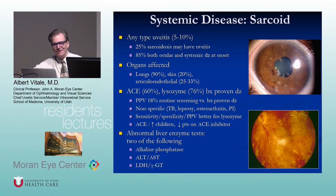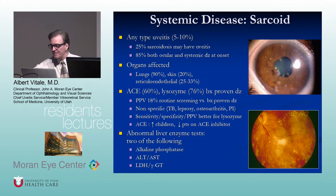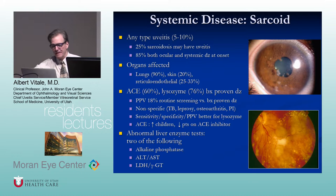A word about sarcoidosis: it can cause any type of uveitis. About 25% of sarcoidosis patients may have uveitis at some point. Organs affected in order of frequency: lungs, skin, reticuloendothelial system, lymph nodes, and eye. The use of ACE and lysozyme is a little controversial. The most useful screening test is the chest x-ray. Sarcoidosis can also affect the liver — transaminases are not infrequently elevated.